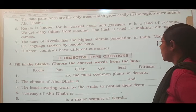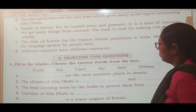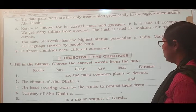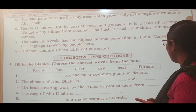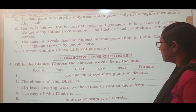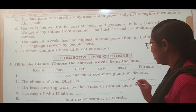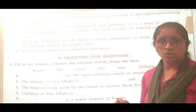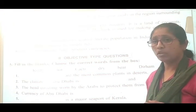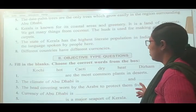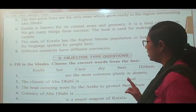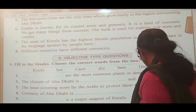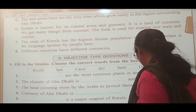The blank: kakki and dhiram are the most common plants in the desert. In the desert, the most common plants are the ones with thorns — that is kakki (cactus). Kakki is the most common plant of the desert area. The climate of Abu Dhabi is dry and hot.